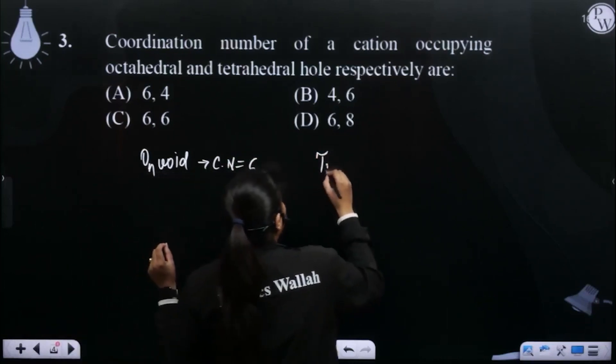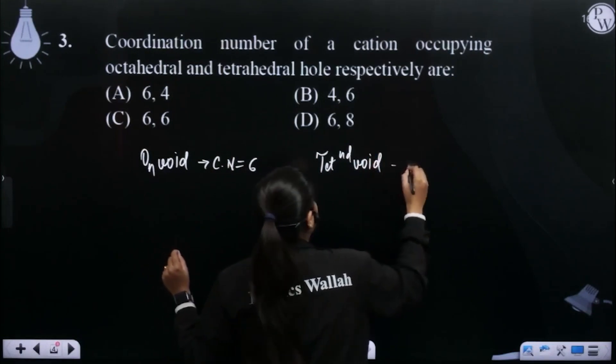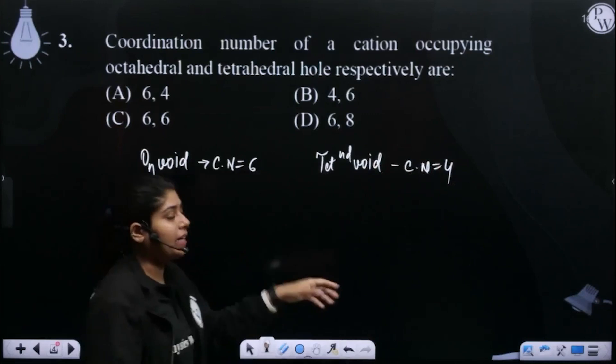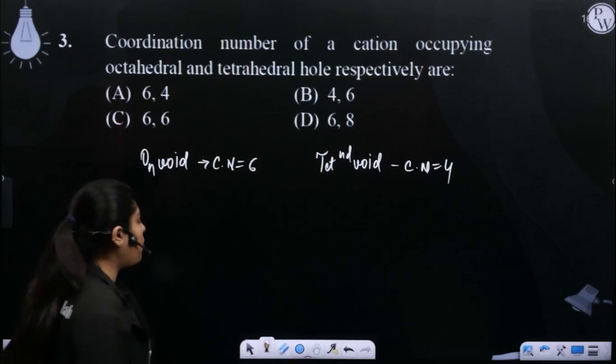Similarly, I talk about tetrahedral void. We have seen how much of the coordination number for tetrahedral void? 4. So if I put a cation in a tetrahedral void, then the coordination number is 4. We have seen the tetrahedral void.